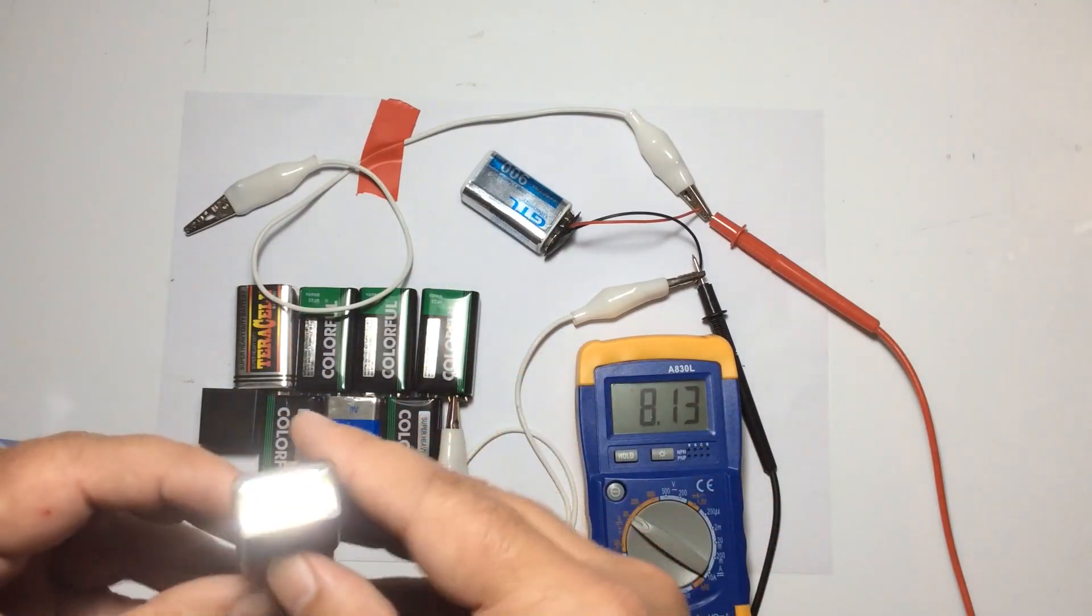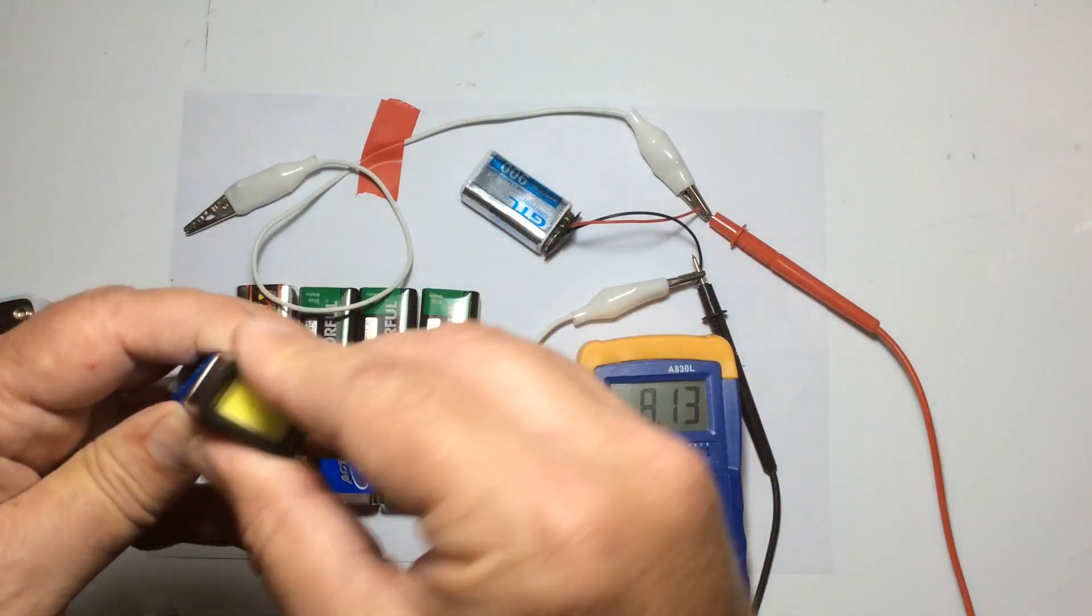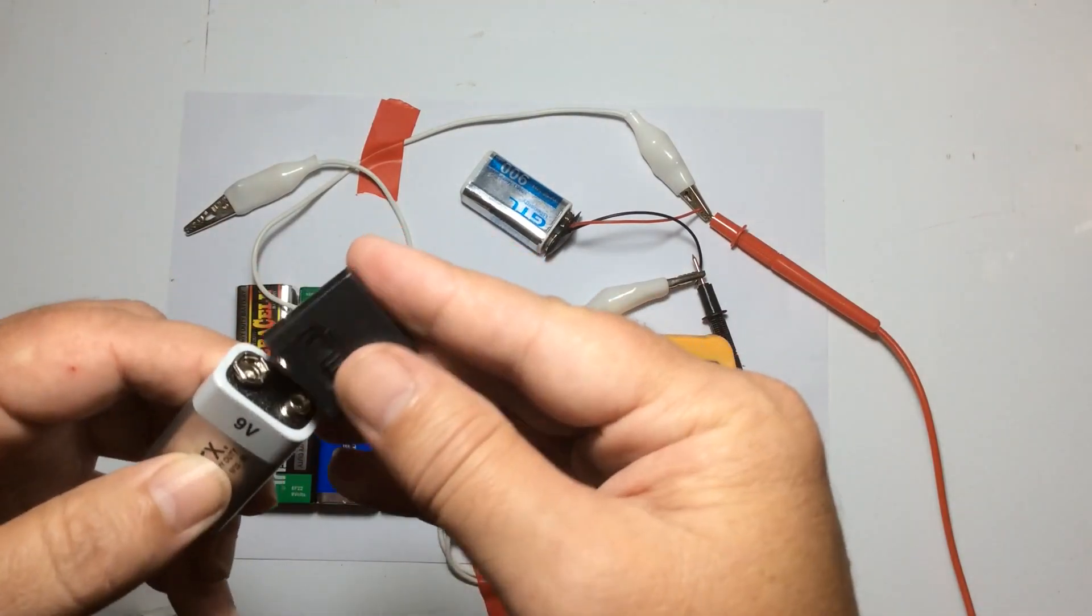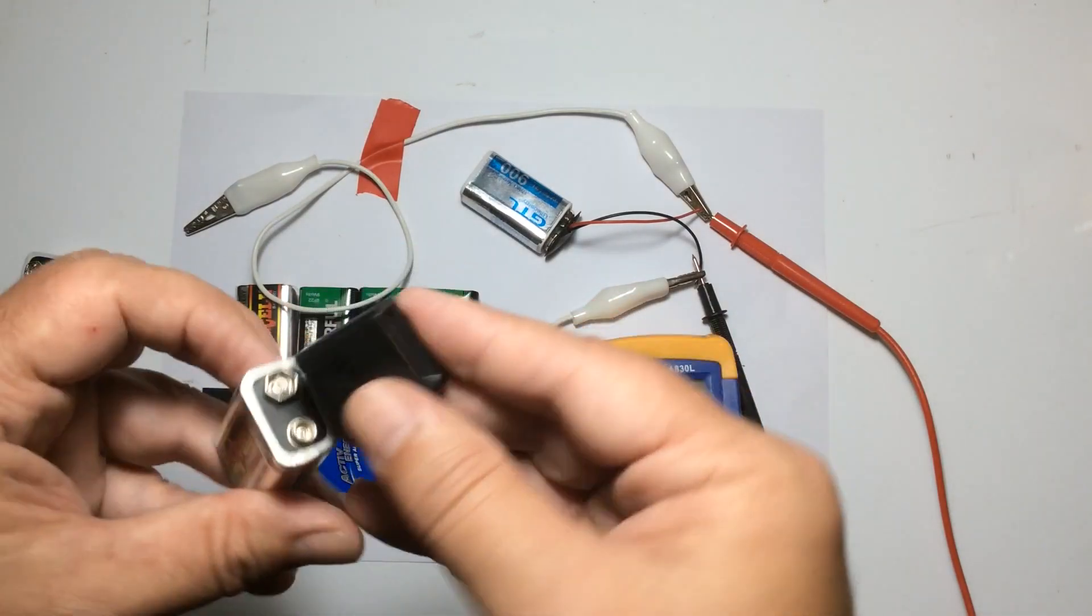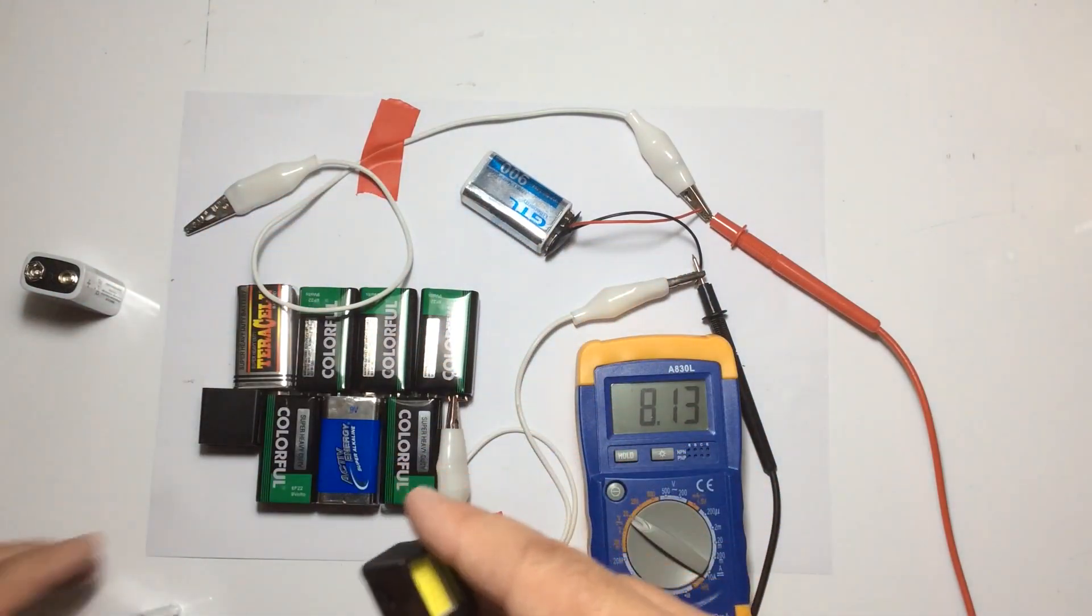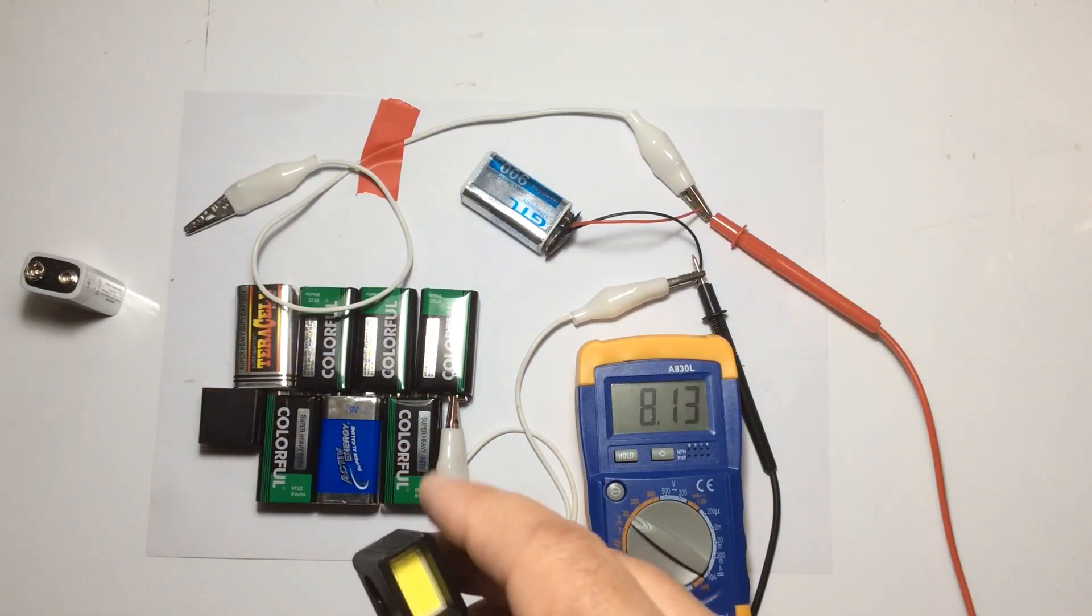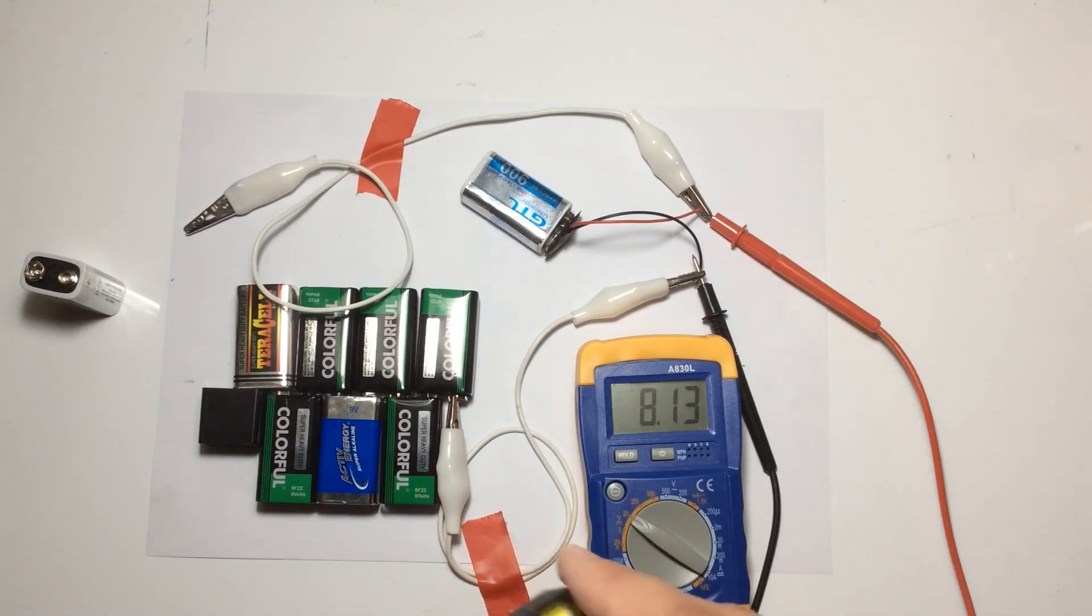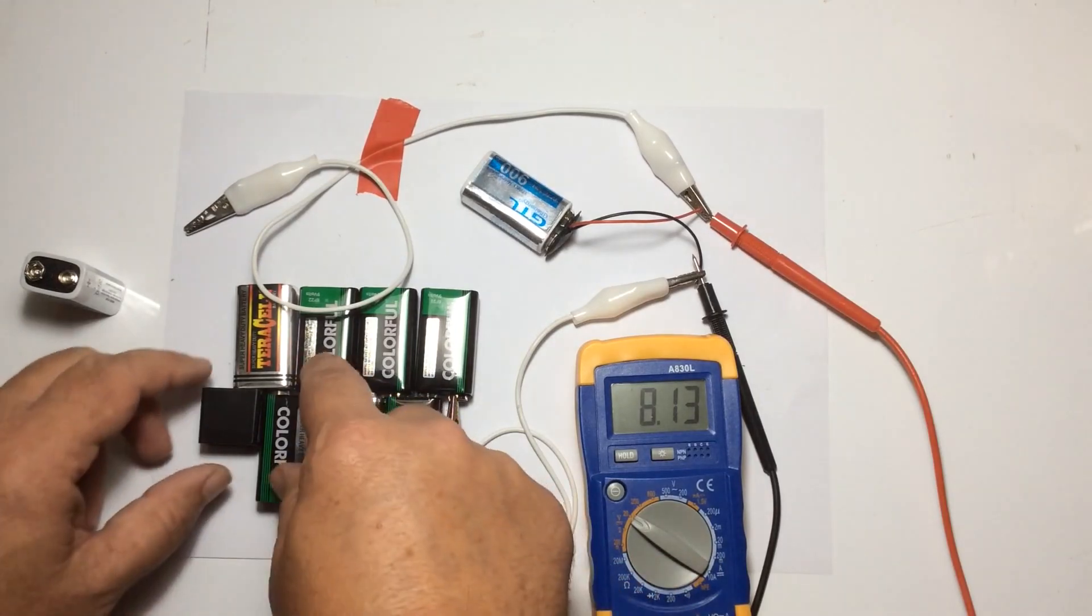Now the problem with some of these batteries is that they still have power remaining in them. It depends on what device you had them in. A lot of these came from electrical meters, multimeters, and that sort of thing. These are completely flat—a lot of the time I leave the meters on and run tests for hours on end. These ones here have a tiny bit of power left in them.